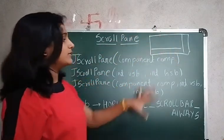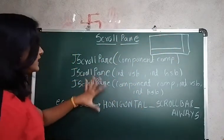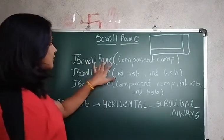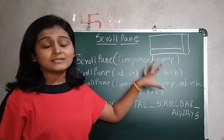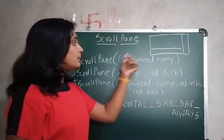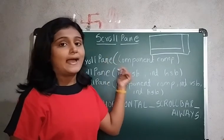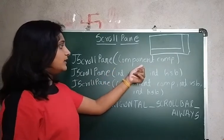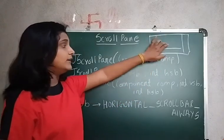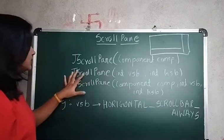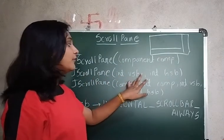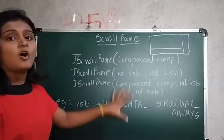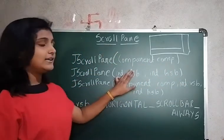For creating this we have some constructors. There are three constructors. Just remember that JScrollPane always extends JComponent, meaning the superclass for JScrollPane is JComponent. In the first constructor, you have to pass the component that you want to add. The second constructor takes integer vertical scrollbar and integer horizontal scrollbar, where you pass constants.